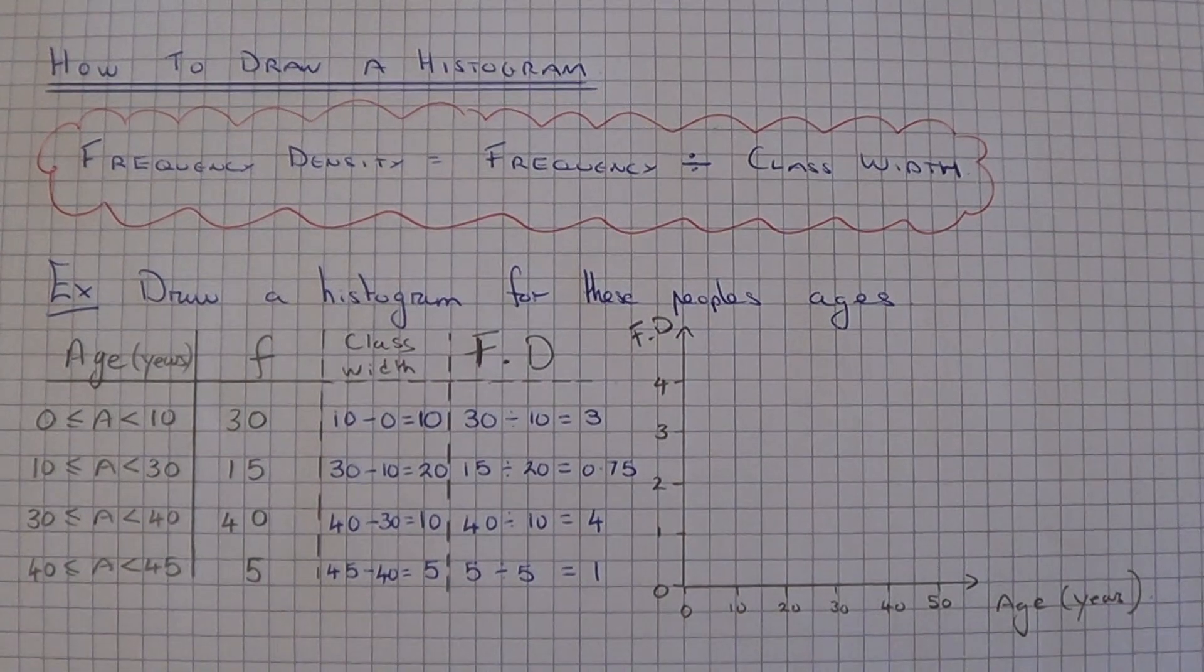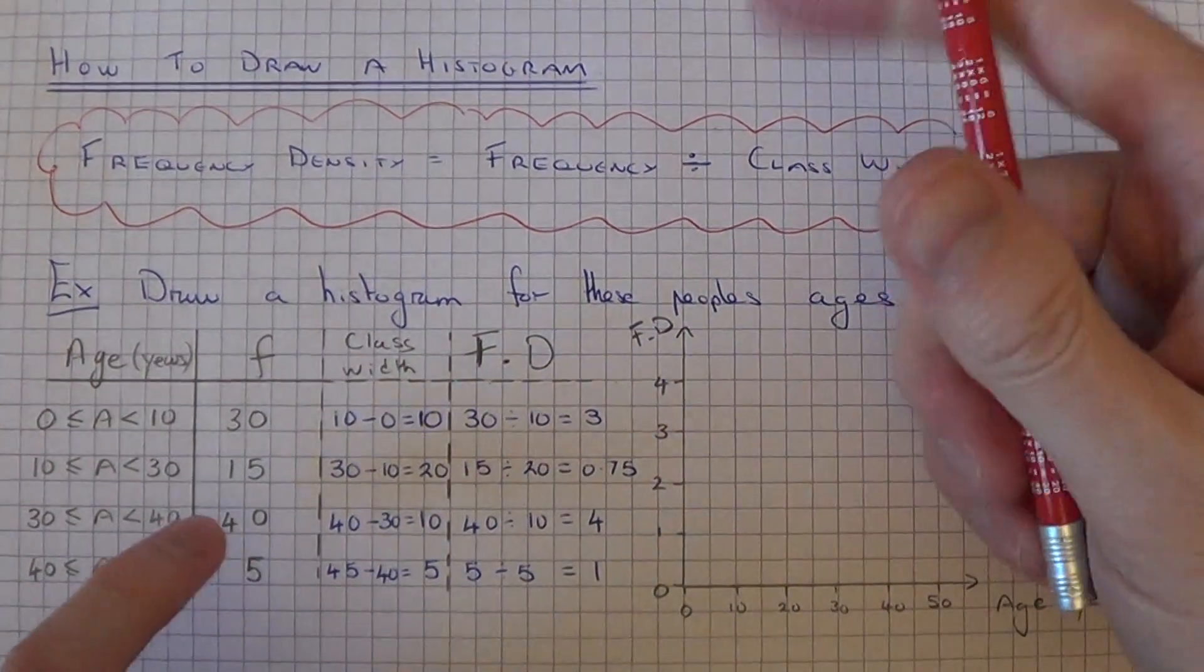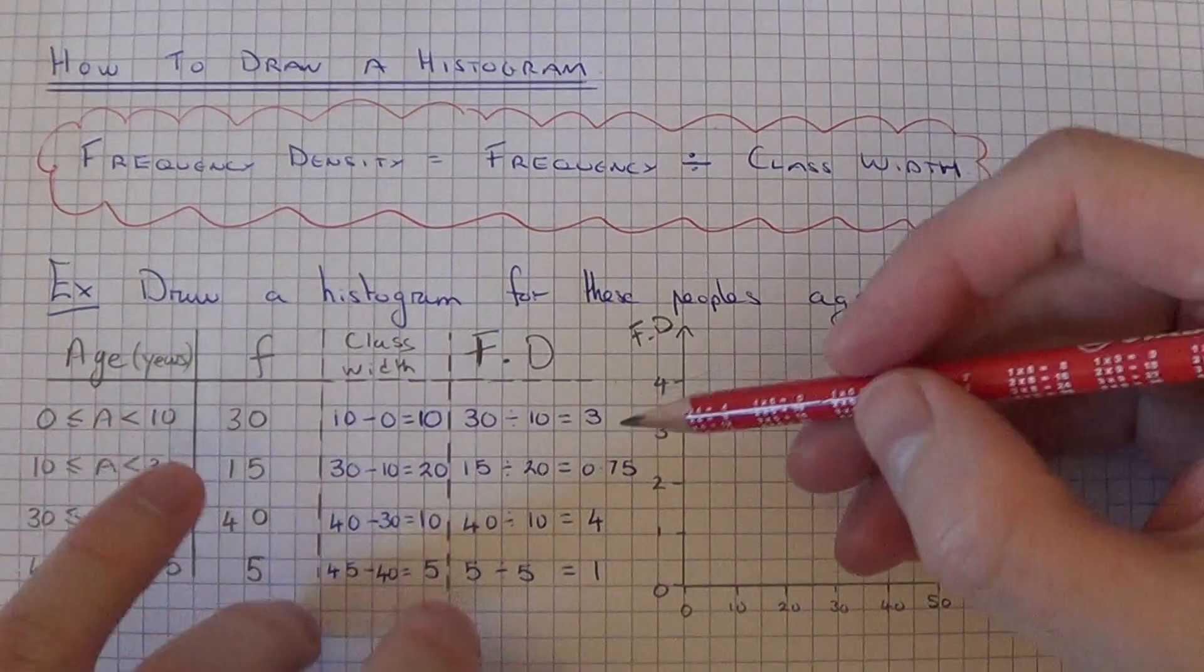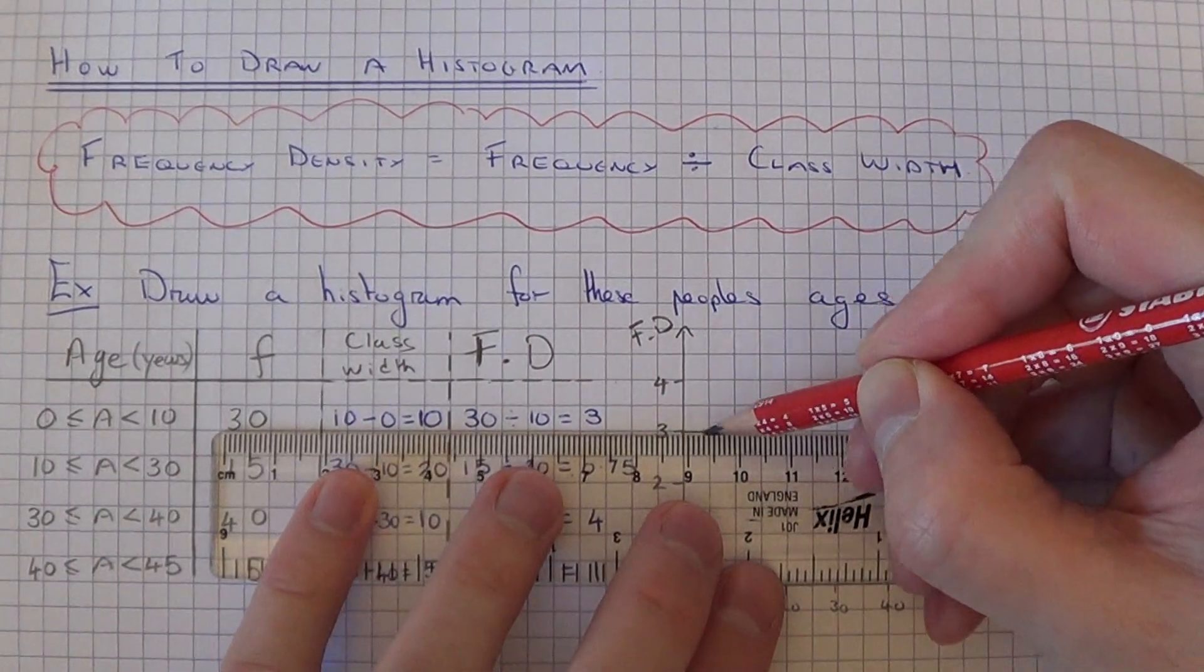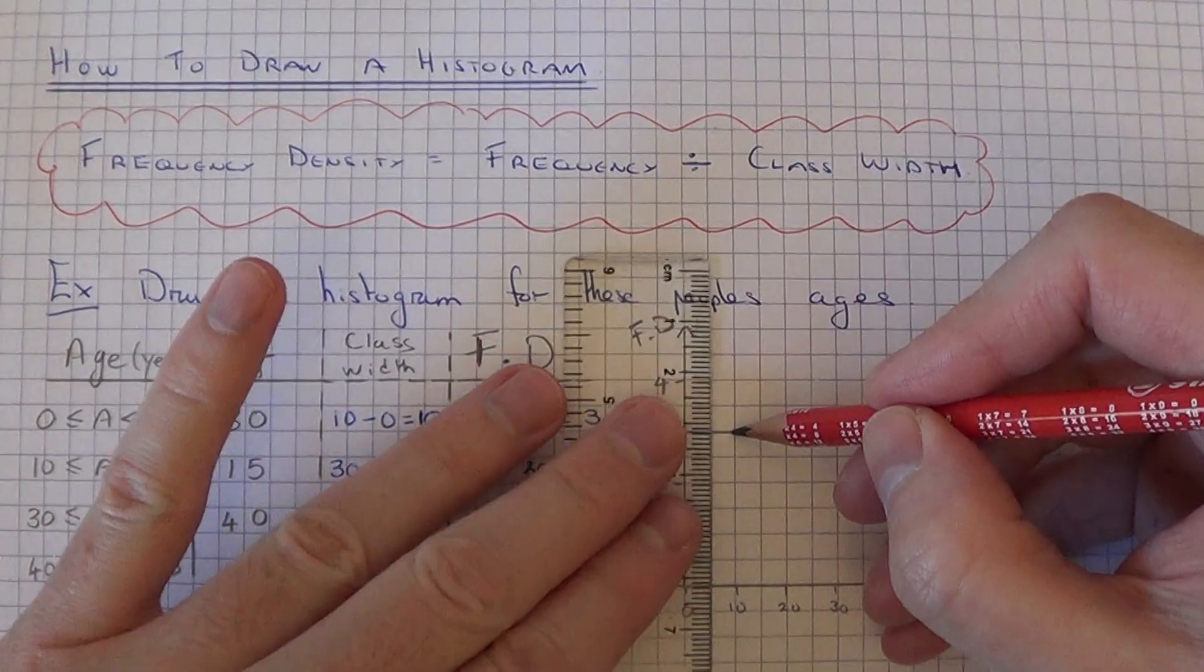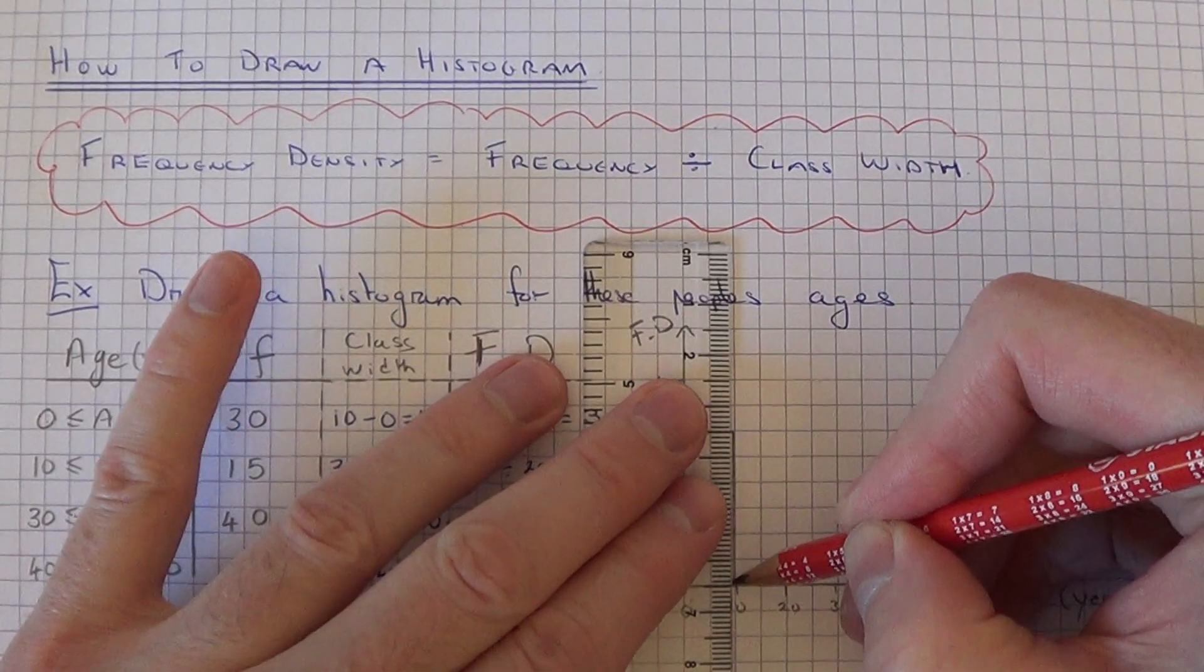So it's going to look a bit like a bar chart. So for the first group, 0 to 10, we've got a frequency density of 3. So that will be our first bar.